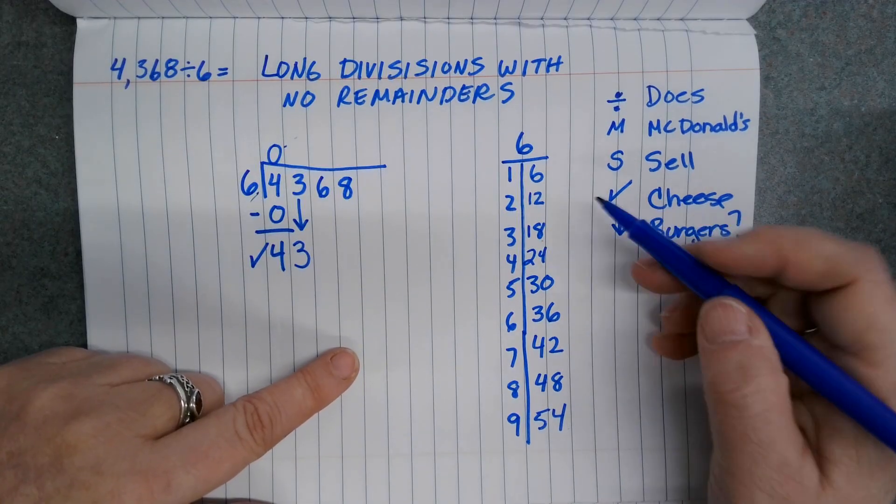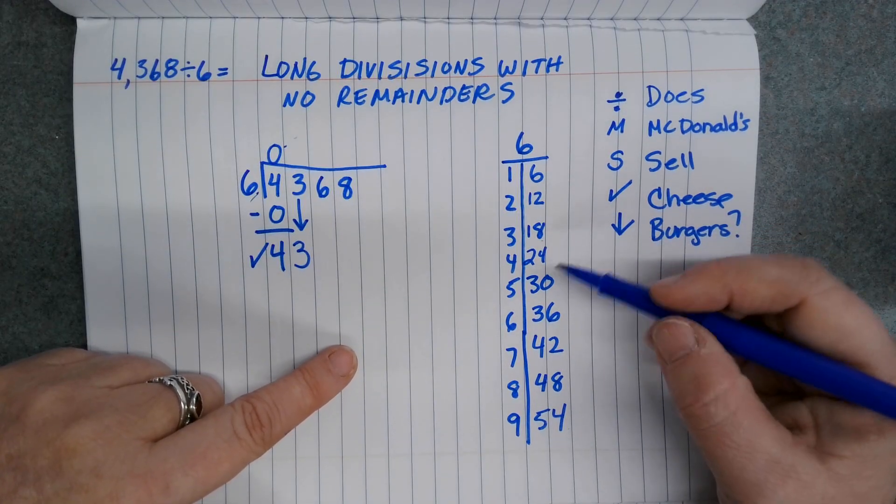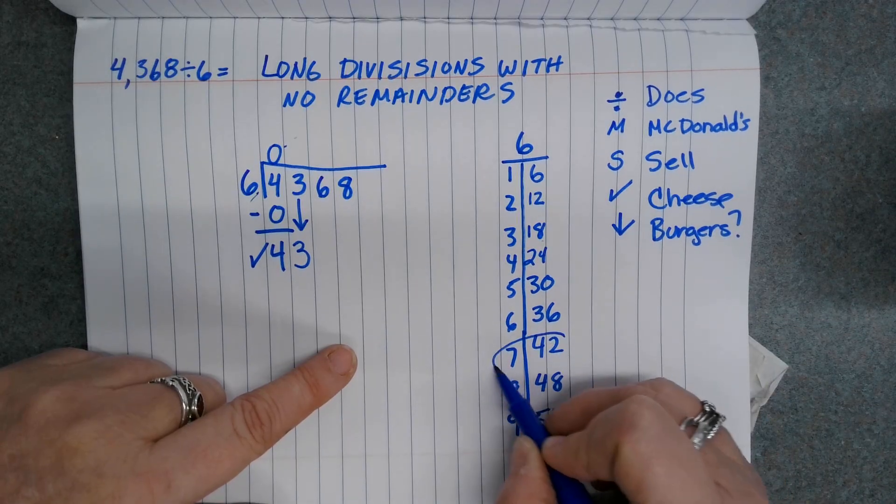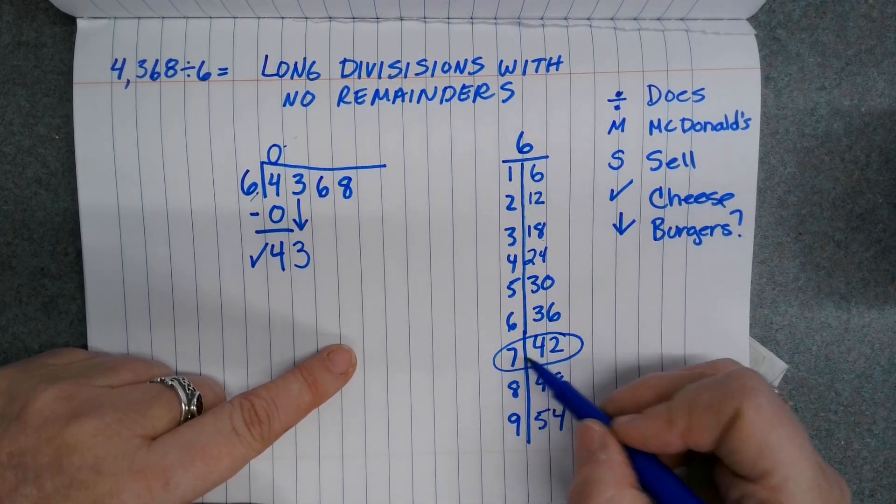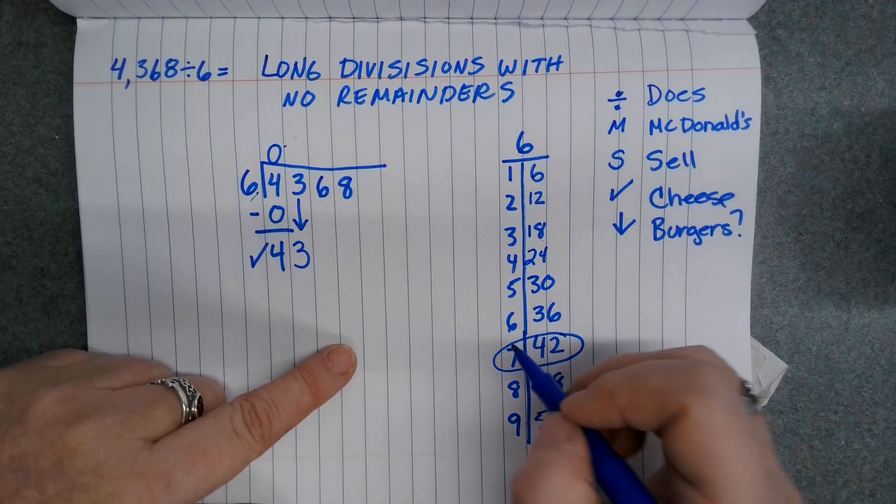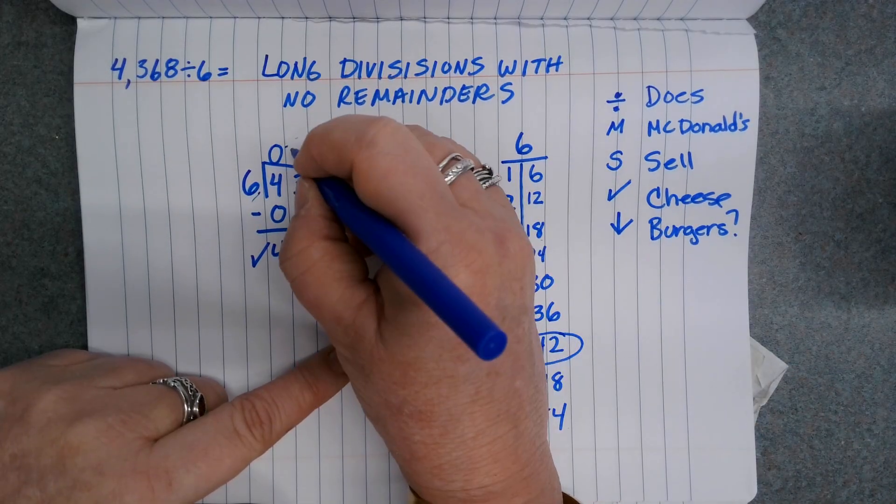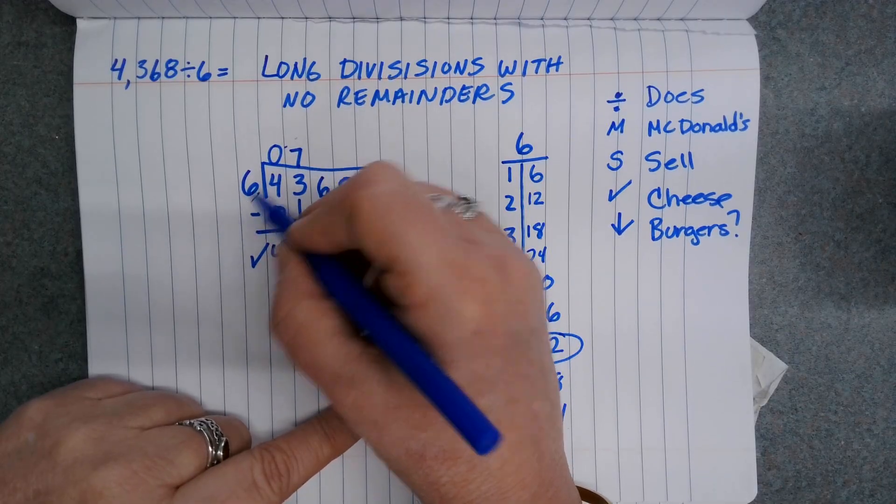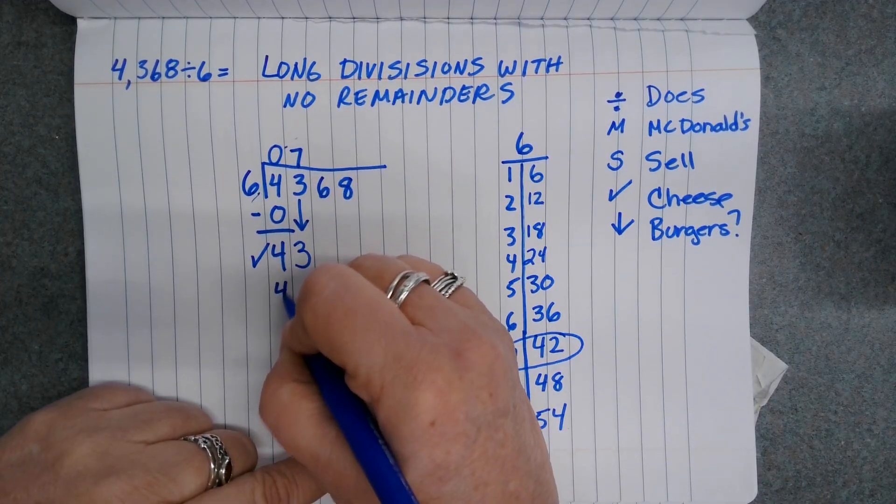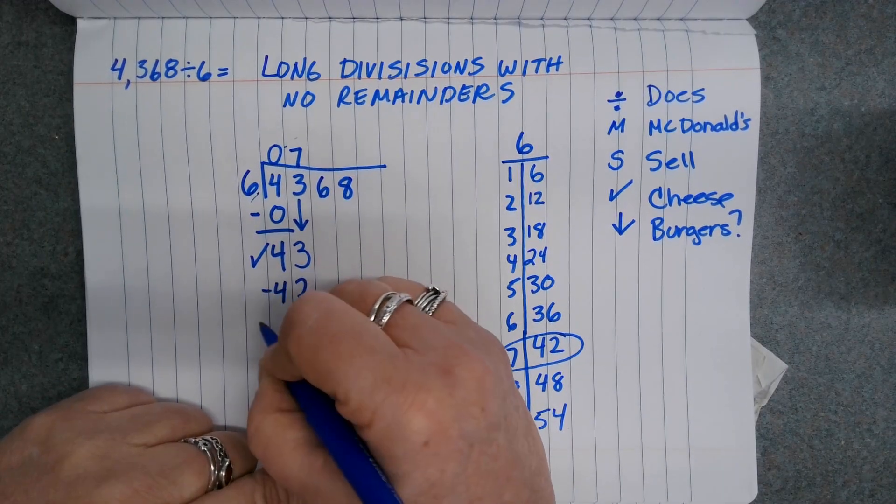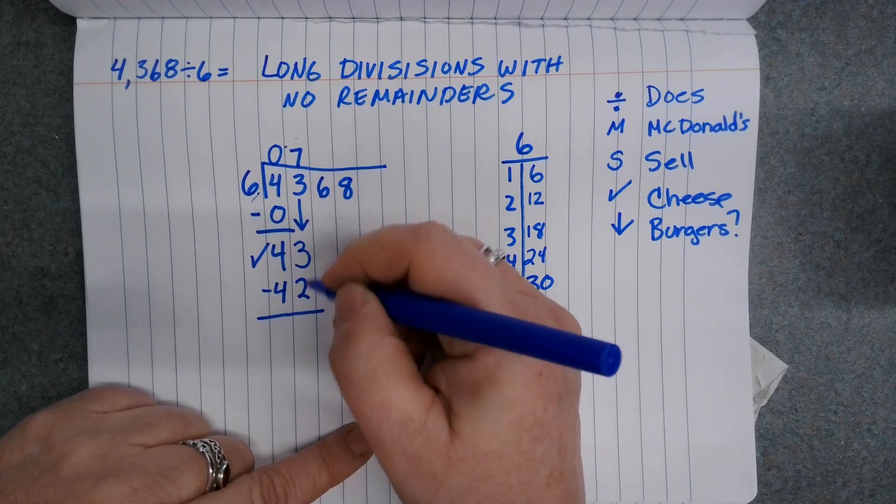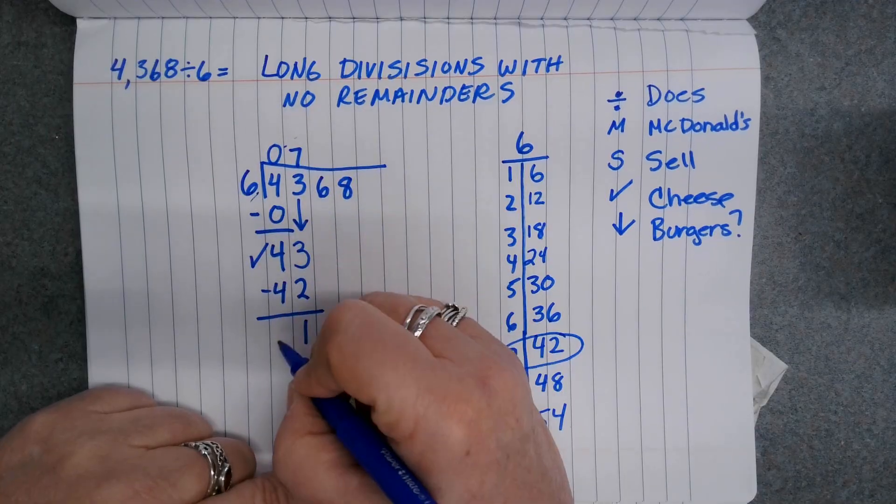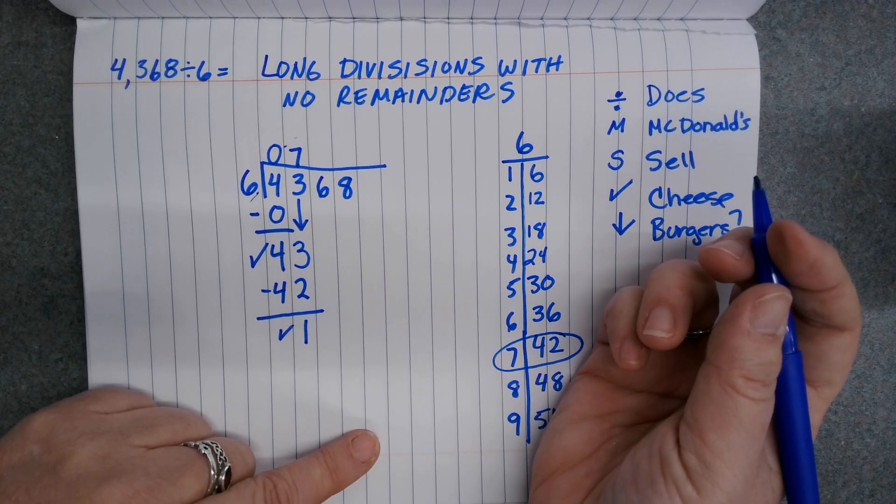43 is a big number. Let me look at my chart and see how close I can get to 43 without going over. If I multiply 6 by 7, I get 42. So I'm going to put 7 up here on top of the 3. Now I'll do the multiplication. 6 times 7 is 42. I'm going to subtract. 3 minus 2 is 1. Is 1 less than 6? Check. It sure is.